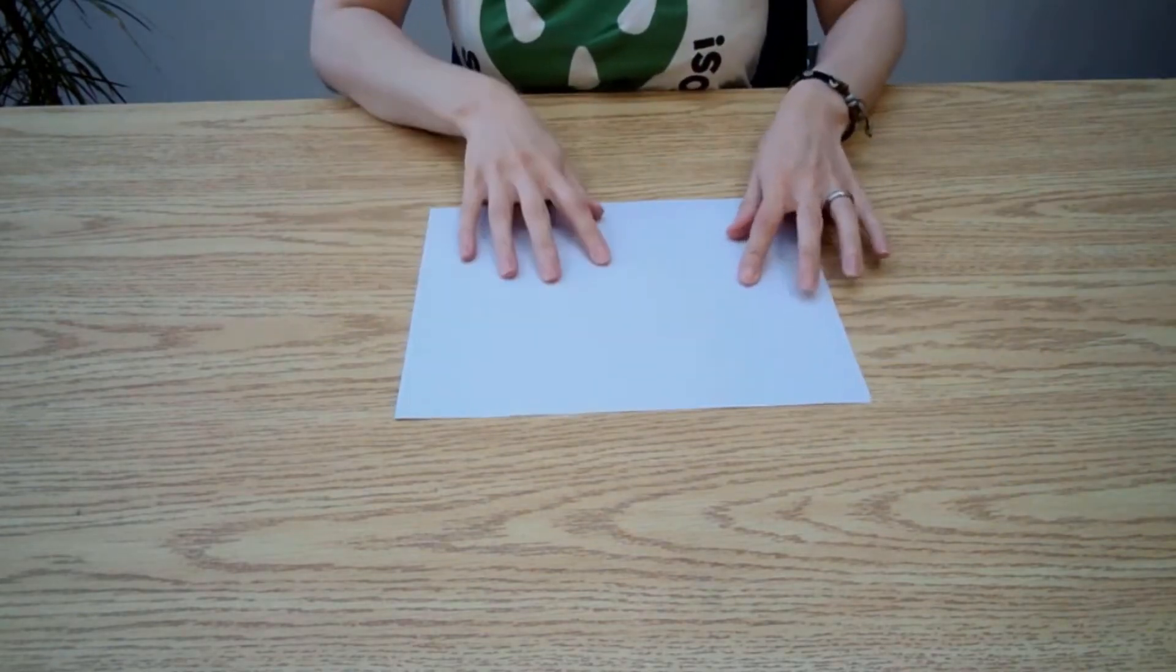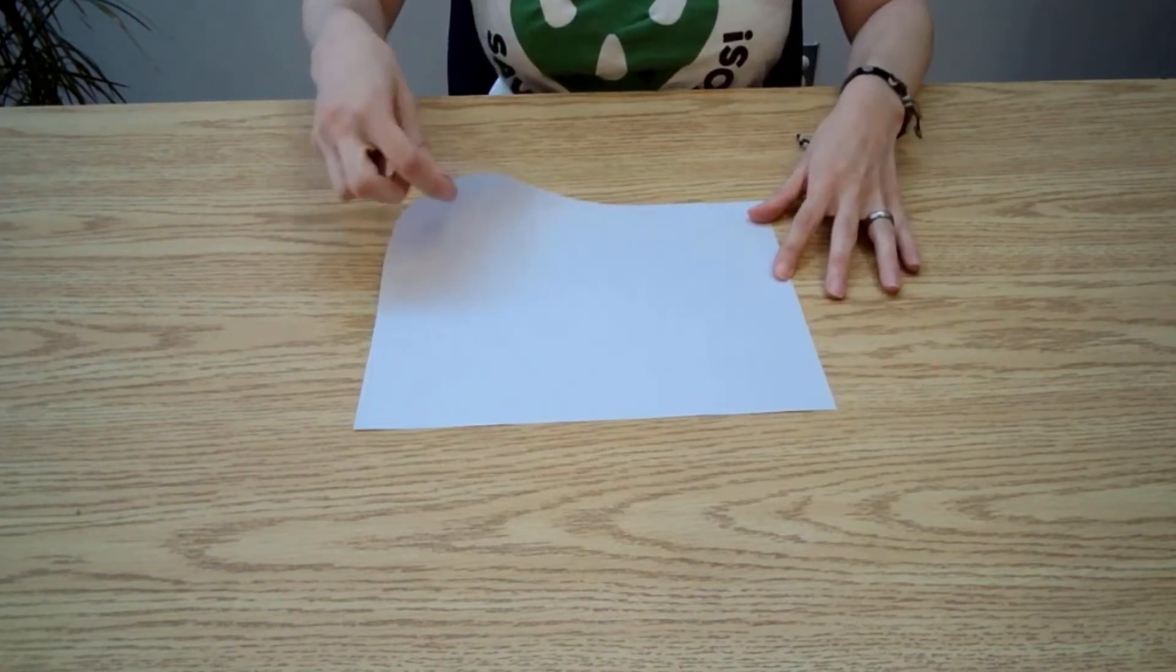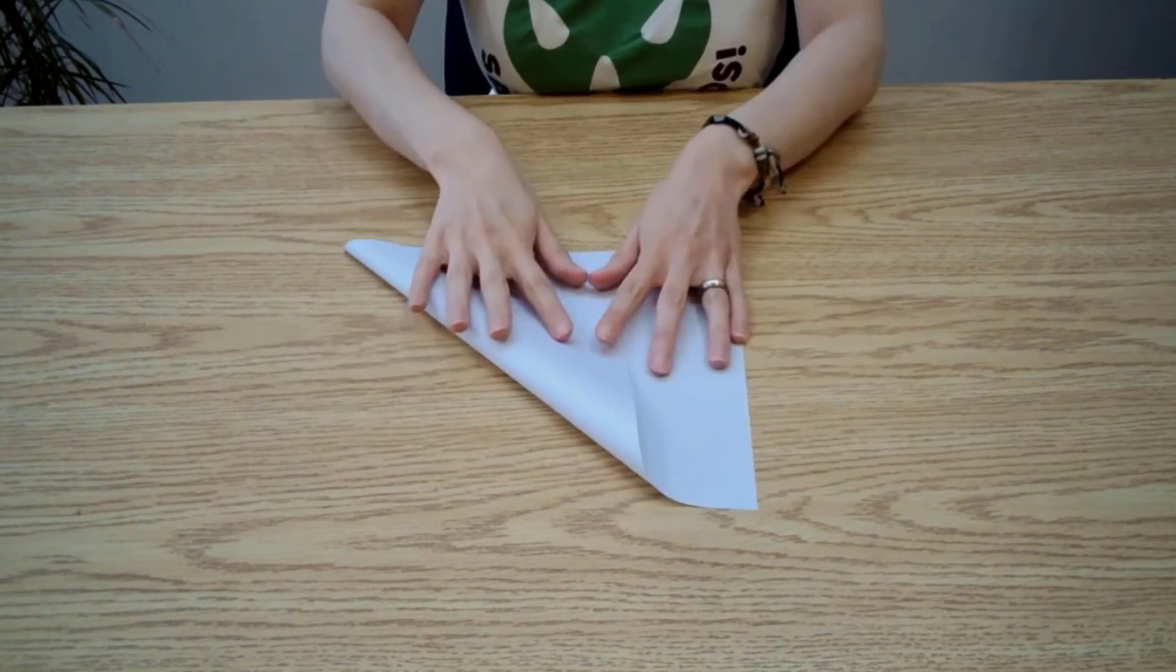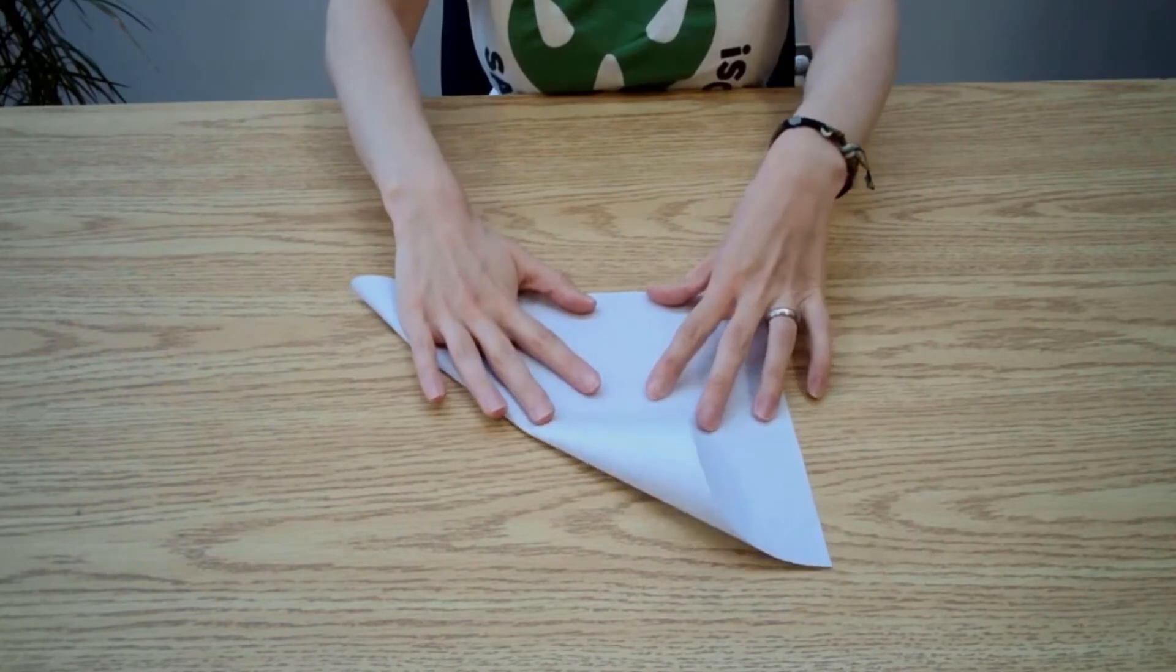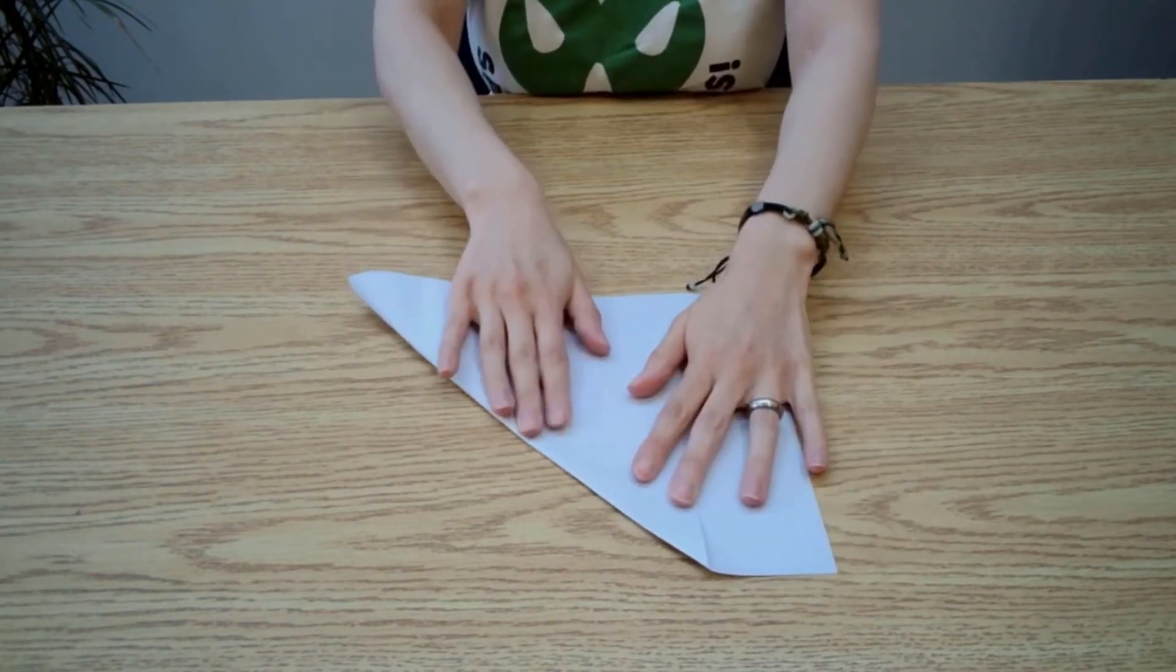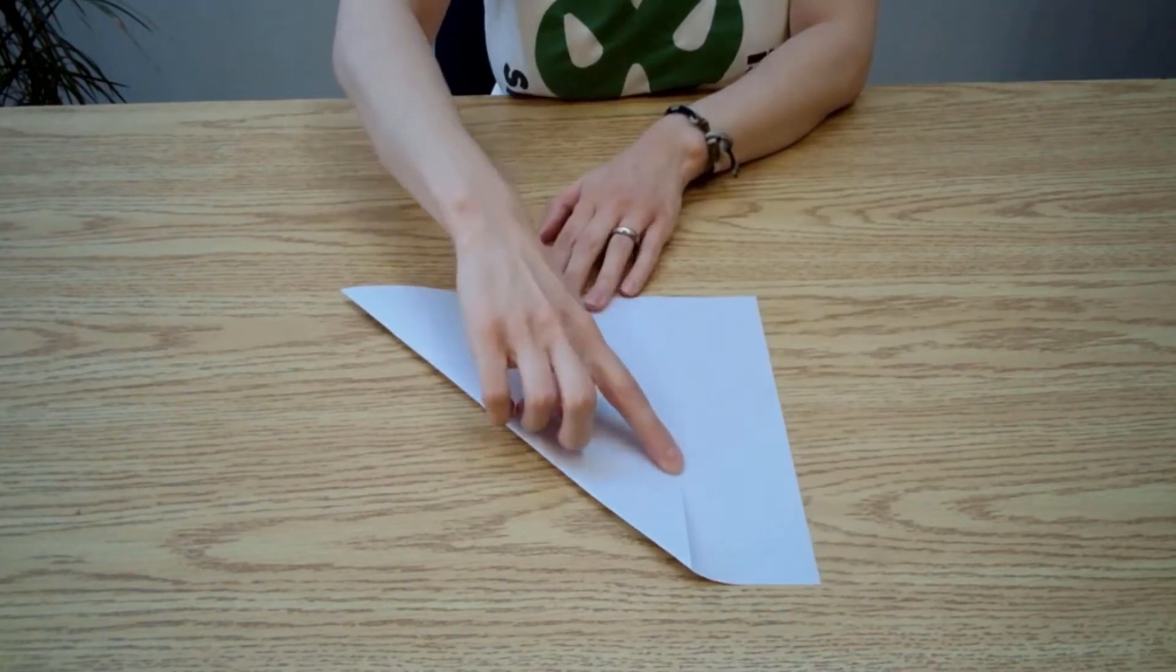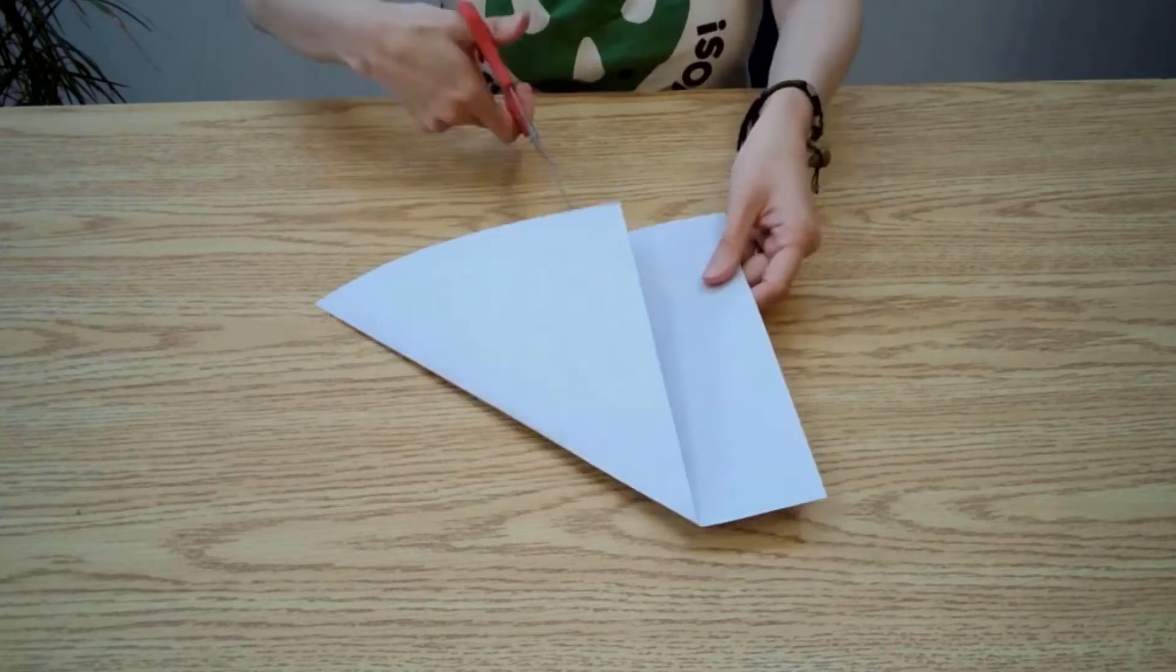For the first step we will take our paper and fold it into a square, cutting the excess strip away. If you already have a piece of paper that's in the shape of a square you can ignore this first step, but this works best if you have paper that's 8 1/2 by 11. This extra strip of paper here will be what we use for our elephant's trunk.